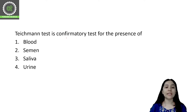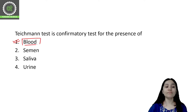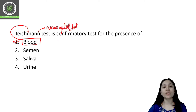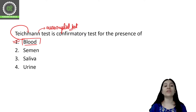Moving to the next question: the Teichmann test is the confirmatory test for the presence of what? Blood, semen, saliva, or urine? The correct option is option number one — blood. The Teichmann test is a microcrystal test. When we use the Teichmann test, we can visualize crystals under a microscope. That is why it is also known as a microcrystal test, and it is a confirmatory test for blood.